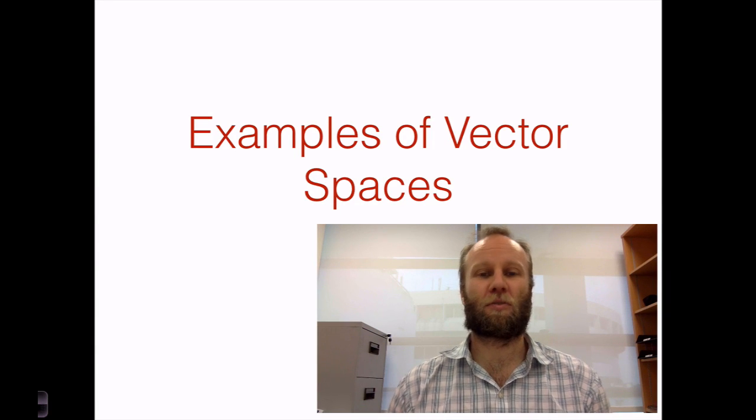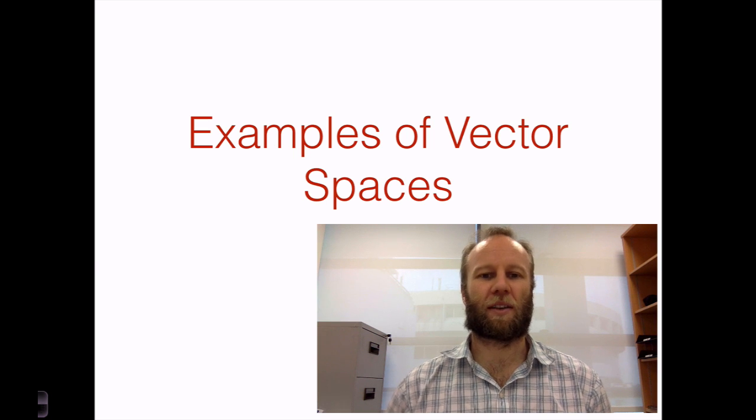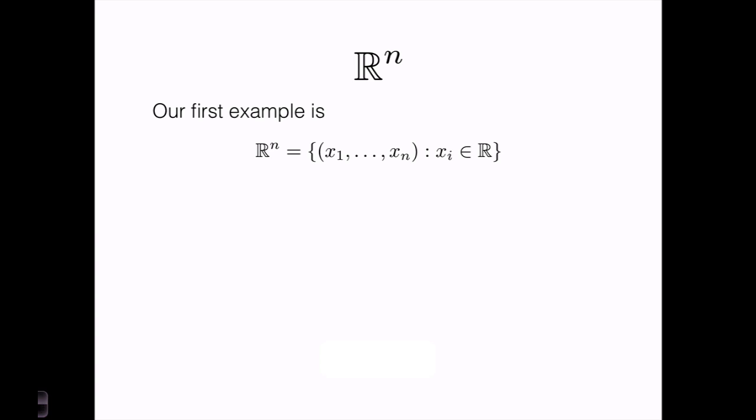Now that we've seen the formal definition of a vector space, in this video we're going to look at some examples of vector spaces. The first example is the example that we've already been studying, and that's R^n, the set of all n-tuples of real numbers. So now let's just go through and see why this is actually a vector space.